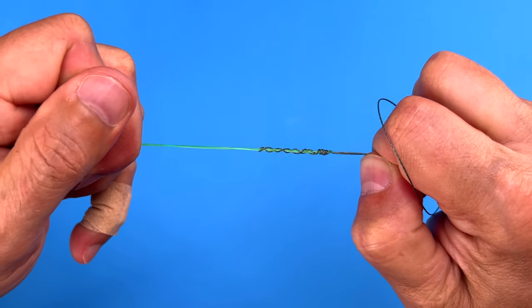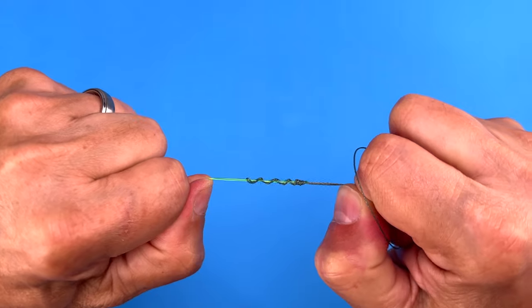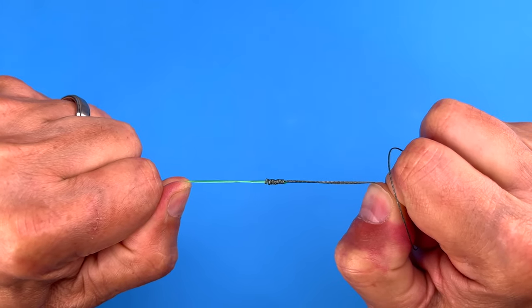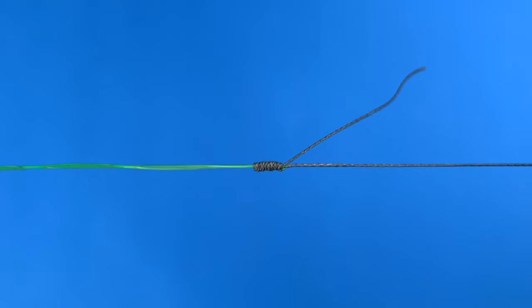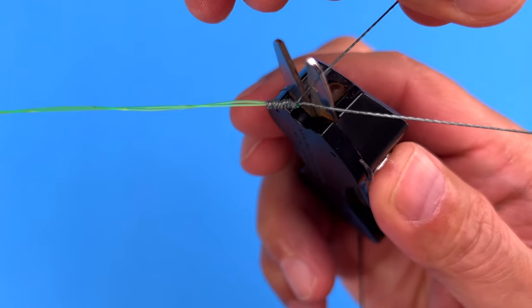And it's going to create a nice strong thin knot for you. And it's very strong. It's not going to come apart. Then cut your tag ends off.